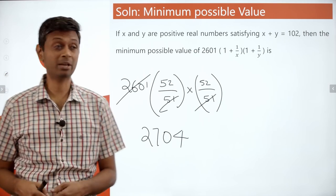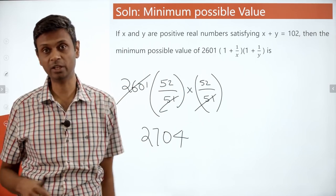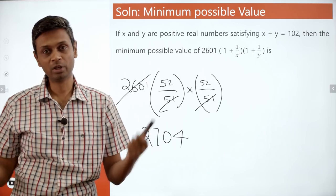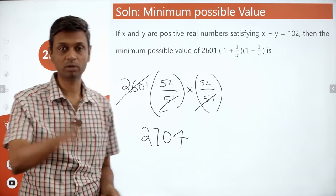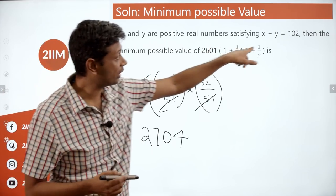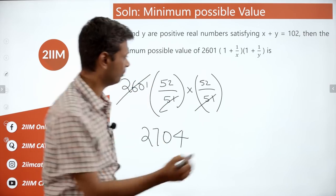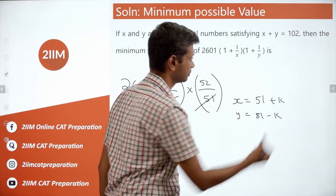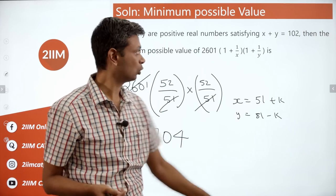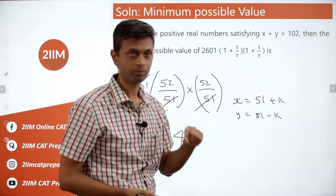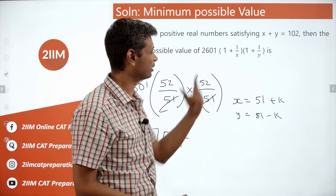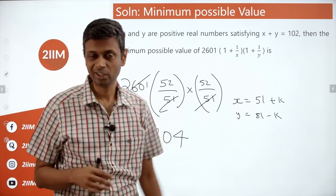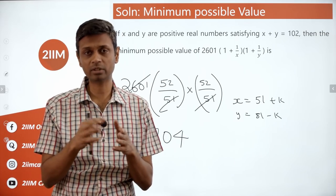The textbook method: set x = 51+k, y = 51−k, then evaluate the expression in terms of k. You can see it's minimized at k = 0. Either approach confirms the minimum value is 2704.